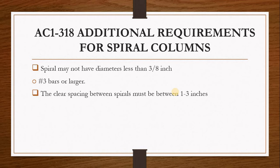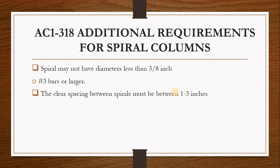The reason ACI requires 1 to 3 inches clear spacing is that spiral columns tend to perform better during earthquake loading because the spiral ties confine the column better. When spacing is smaller, confinement improves; when spacing is larger, confinement is reduced and performance drops. This is why ACI states that the clear spacing between spirals must be between 1 and 3 inches.